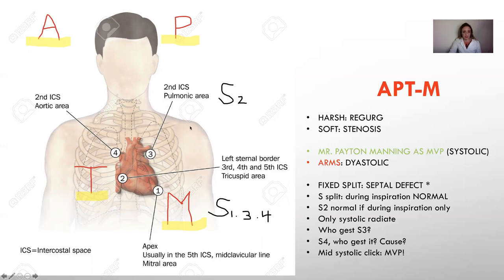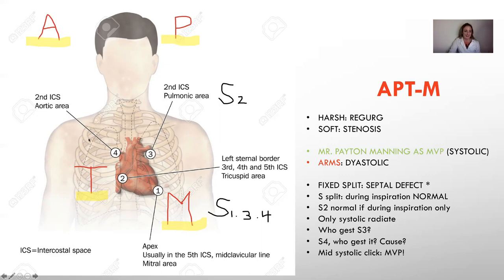If you draw this gentleman on your board and then you draw the heart and you do your four points, we're going to label this corner A, this corner P, this corner T, and this corner M. This gentleman lives in apartment M. A for aortic, P for pulmonic, T for tricuspid, and M for mitral. That's the location — that's like 25% of the murmur information right there.